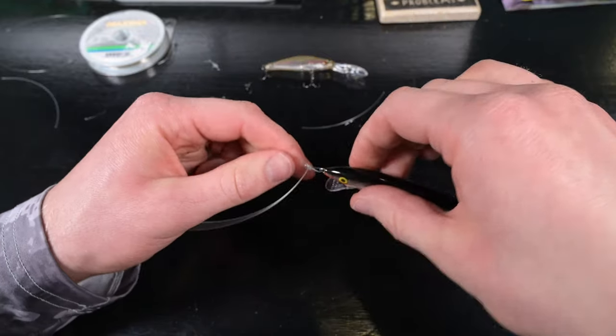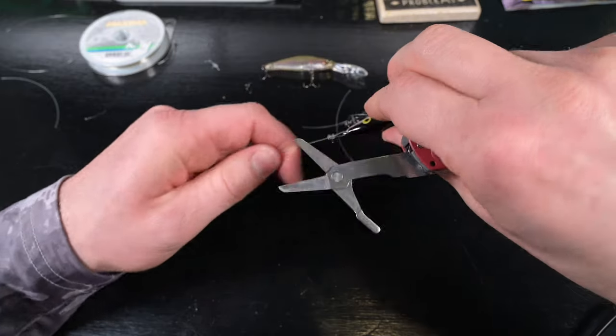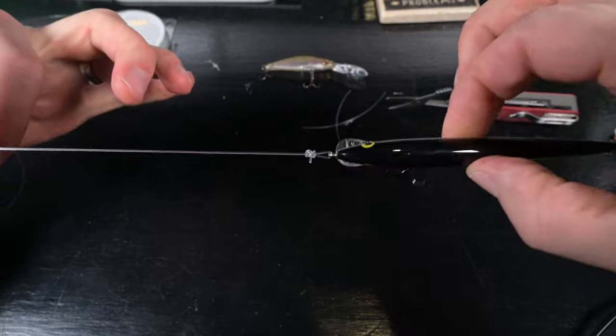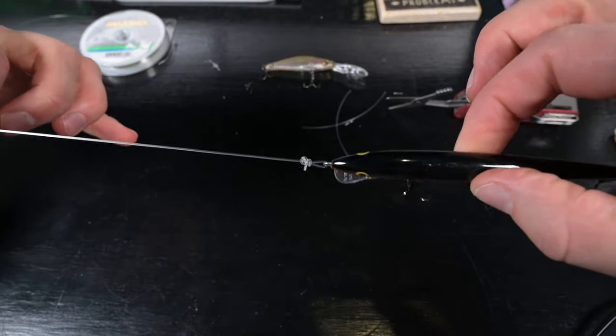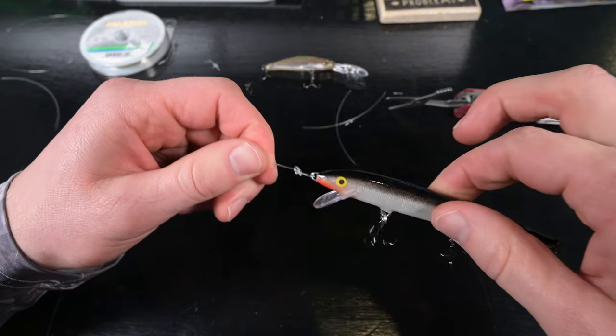Look how much smaller that loop is now. That is a very discreet knot package. This is 50 pound so it's huge, purely for demonstration purposes, but that is a very discreet loop.